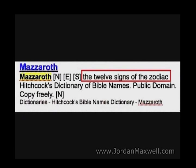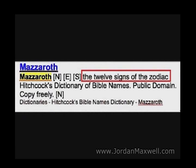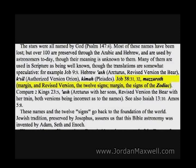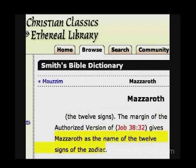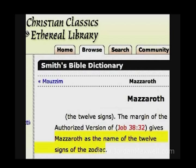Here's Hitchcock's Bible Names Dictionary — look up Mazaroth: twelve signs of the Zodiac. Another footnote under Job 38 in the Bible: Mazaroth, the twelve signs of the Zodiac. The Ethereal Library of Christian Classics also says Mazaroth is the name of the twelve signs of the Zodiac.